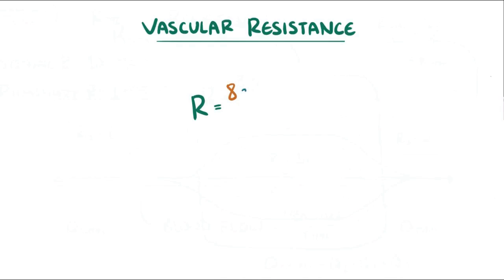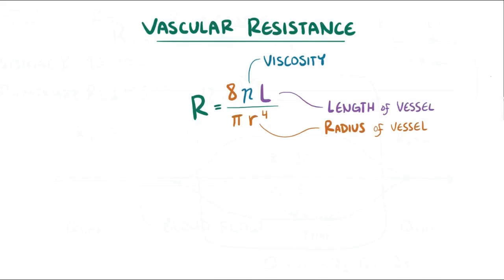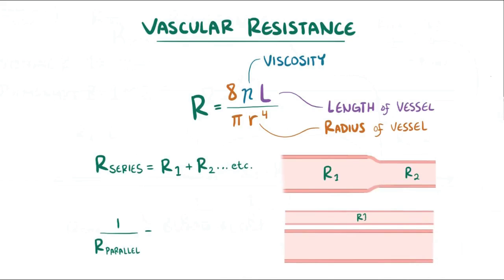Alright, as a quick recap, vascular resistance is a measure of the resistance that must be overcome to push blood through the vessels, and can be represented by the equation 8 times viscosity eta times length L divided by pi times R to the fourth. So it's directly proportional to the viscosity and the length, and inversely proportional to the radius to the fourth power. Resistance in series is equal to the sum of each resistance, and 1 over the resistance in parallel is equal to the sum of the inverse of each resistance.